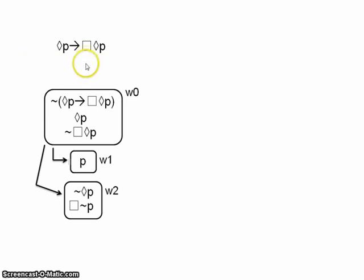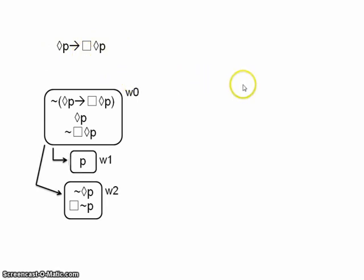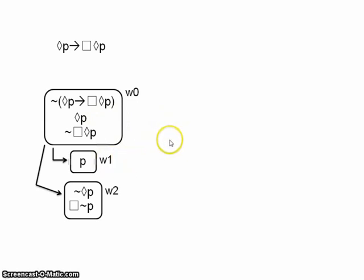We need a counterexample, and we can quite easily see one in this tree. Since this argument has no premises, all we need to do is create a counterexample that makes the conclusion false. Remember that we are in system K here. Propositional variables are true or false within particular worlds — nothing is true or false simpliciter. So P will be true or false in world one, true or false in world two, and so on. Our counterexample must therefore include worlds, and what we do is essentially minimise the truth tree.